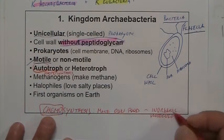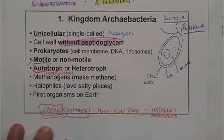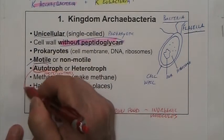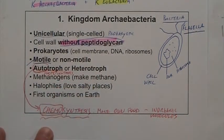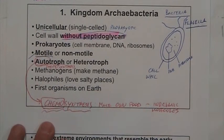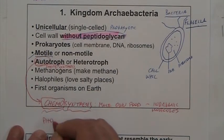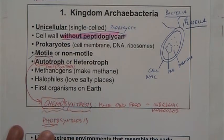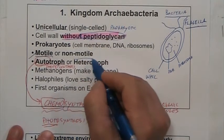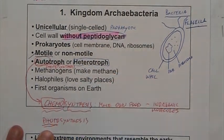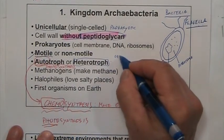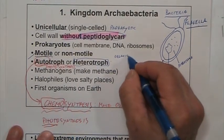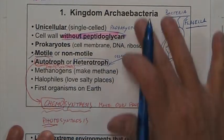Not everybody can do chemosynthesis — it is a very special type of autotroph. Autotrophs can be of two types: doing chemosynthesis or doing photosynthesis, using energy from the sun. They can also be heterotrophs, meaning they need to ingest organic molecules from other organisms.